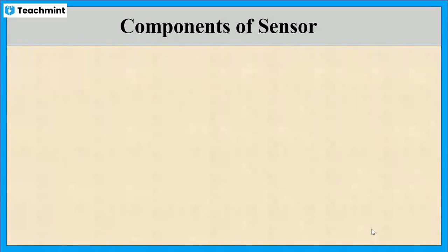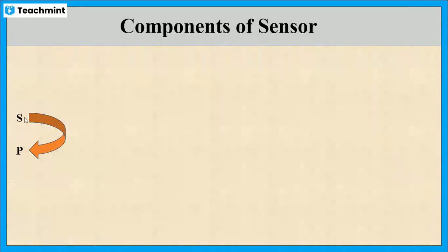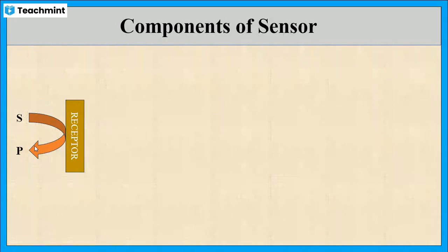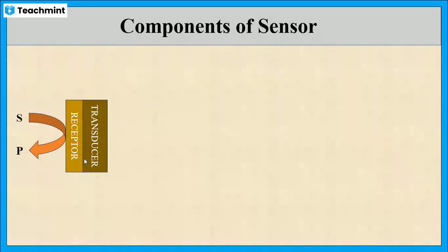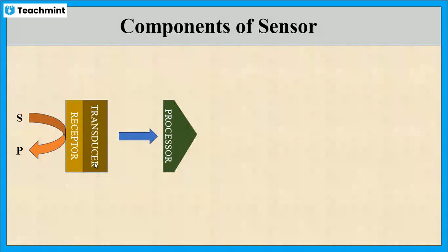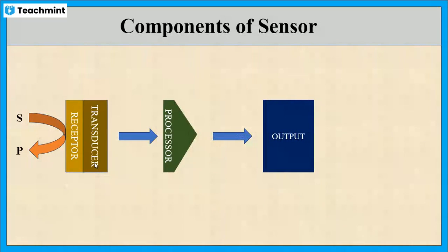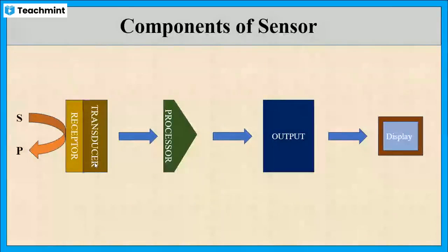Now let us see what are the components of sensors. Consider a chemical reaction where a starting material gives a product. This product is recognized by the receptor and transferred to the transducer. The signal is then processed, converted into an output signal, and the values are displayed.